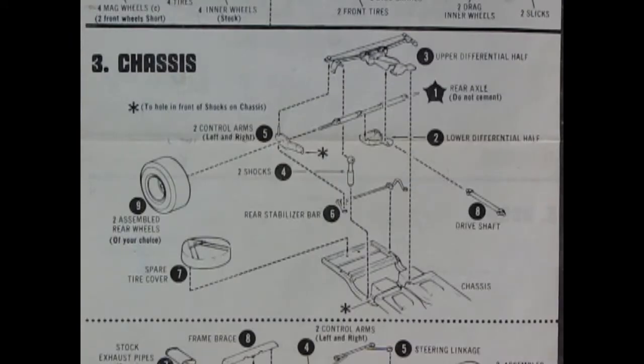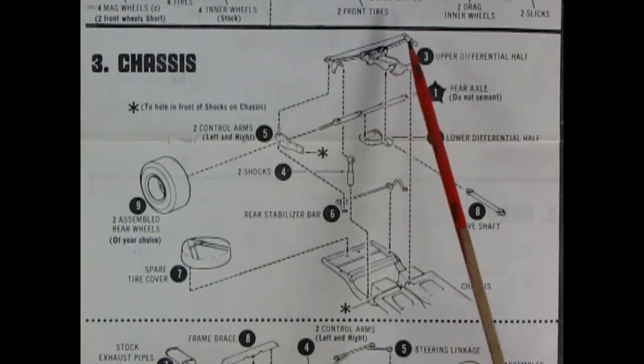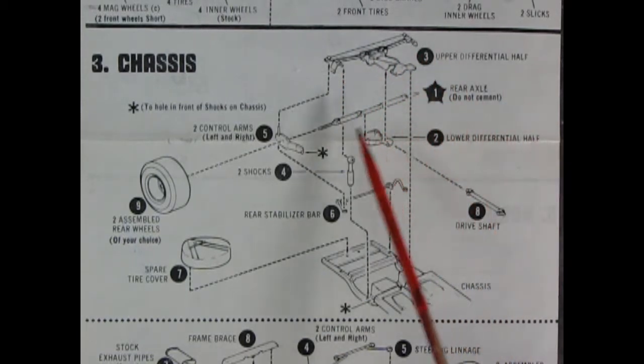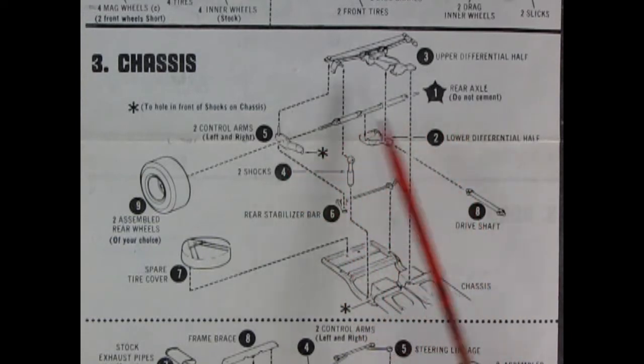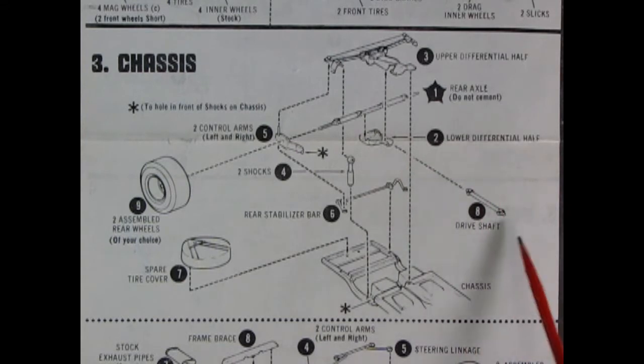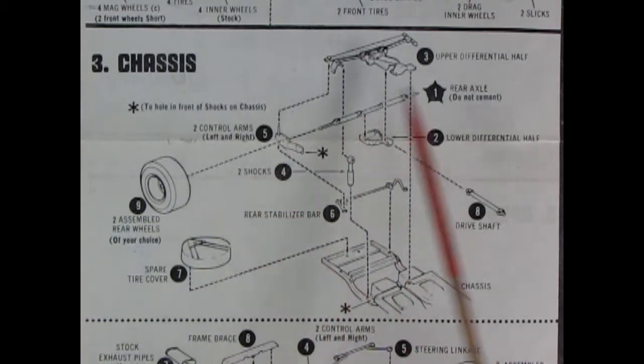Panel three is our chassis panel. And you get a lot of details back here. You get the upper differential half with the spring molded on, the rear axle wheel which you do not cement. You get two control arms right and left, two shock absorbers right and left, the lower differential half, the drive shaft, the spare tire cover. And you can assemble your wheels right onto this after you've dropped it all in. Don't forget your stabilizer bar.